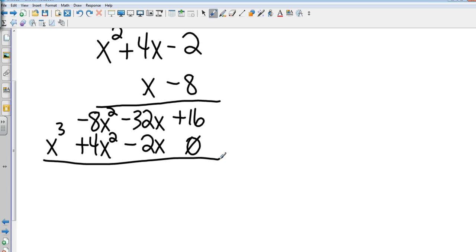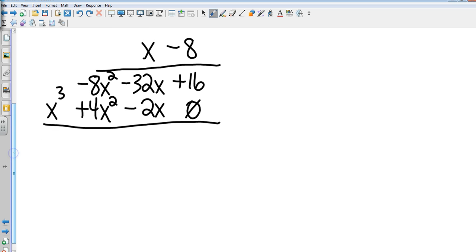Now there's not going to be any carrying in this, so I can just go from left to right. Bring down the x³. Negative 8x² plus 4x² is negative 4x². Negative 32x minus 2x is negative 34x. And 16 and 0 gives me 16.